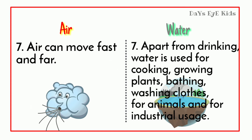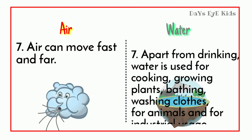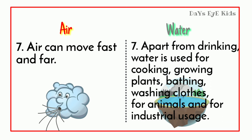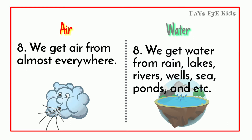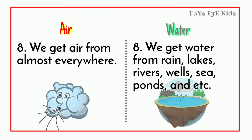Air can move fast and far. Apart from drinking, water is used for cooking, growing plants, bathing, washing clothes, for animals, and for industrial usage. We get air from almost everywhere. We get water from rain, lakes, rivers, wells, sea, ponds, and more.